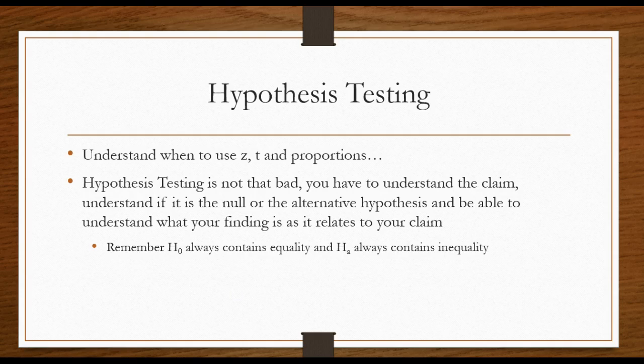Hypothesis testing. Understand when to use Z, T, and proportions. Hypothesis testing is not that bad. You have to understand the claim. Understand if it is the null or the alternative hypothesis and be able to understand what your finding is as it relates to your claim. Remember that your claim can be either the null or the alternative. And also remember that your null hypothesis always contains equality. Your null hypothesis will either be the mean is equal to, the proportion is equal to, or the mean is less than or equal to, or the mean is greater than or equal to, or the proportion is greater than or equal to, or less than or equal to. And your alternative always contains inequality. Your alternative will always be either not equal to, less than, or greater than.